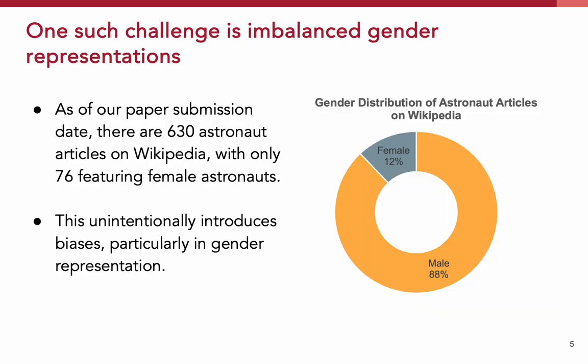One challenge we face is the gender imbalance in Wikipedia's articles. Taking astronaut articles as an example, of the 630 total astronauts, only 76 featured women. This results in just 12% of these articles highlighting female astronauts, while the remaining 88% focus on men, as shown in the pie chart. This imbalance can skew public perception and reduce the visibility of achievements by underrepresented genders. Hence, addressing this issue is crucial to ensure Wikipedia remains accurate and inclusive.